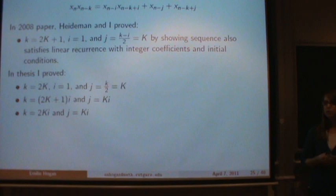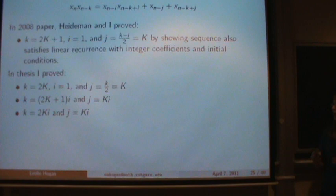So instead of i being 1, we now let i be arbitrary, but it also must multiply the previous condition. So we have 2k plus 1 times i, and k times i for the i case, and now let's see for the even case.